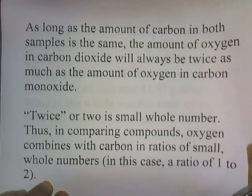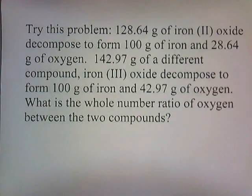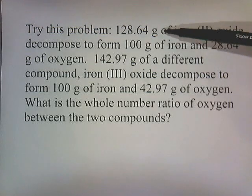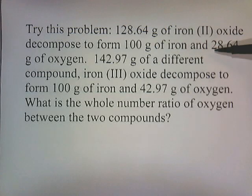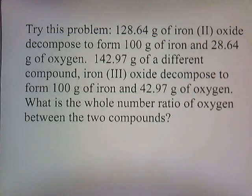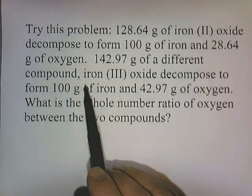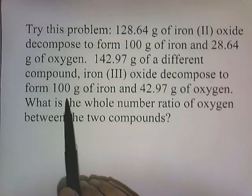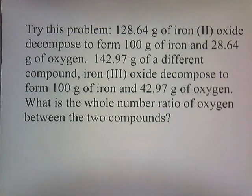Let's try a problem that might clarify it a little bit more. We've got 128.64 grams of iron(II) oxide, which decomposes to form 100 grams of iron and 28.64 grams of oxygen. Now we have another compound made out of iron and oxygen: 142.97 grams of iron(III) oxide decomposes to form 100 grams of iron and 42.97 grams of oxygen. What is the whole number ratio of oxygen between the two compounds?